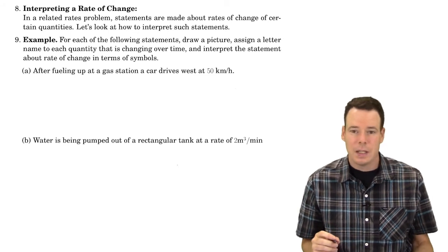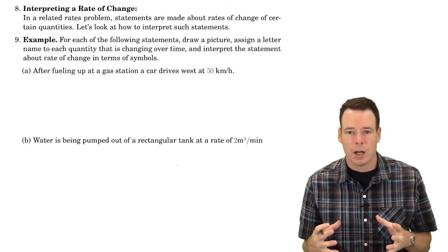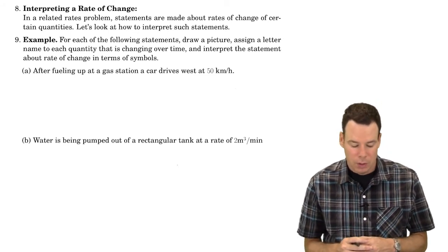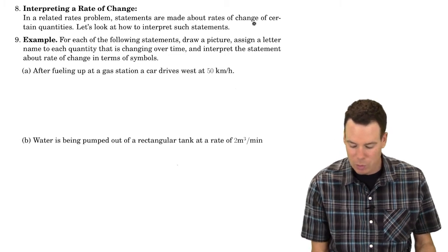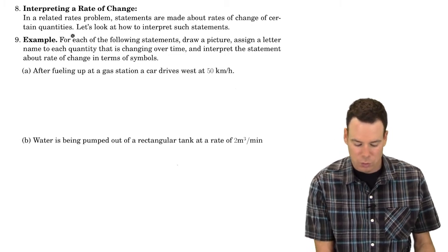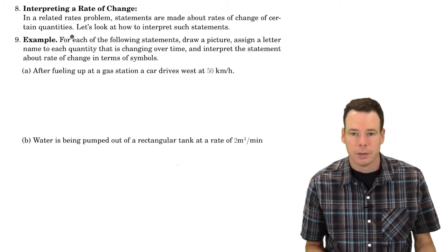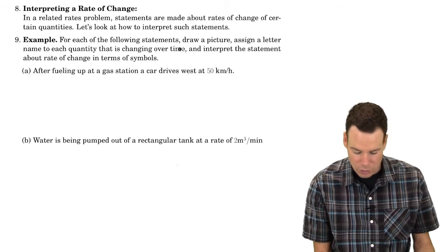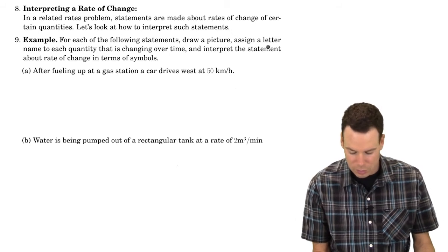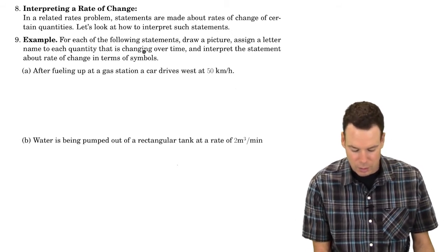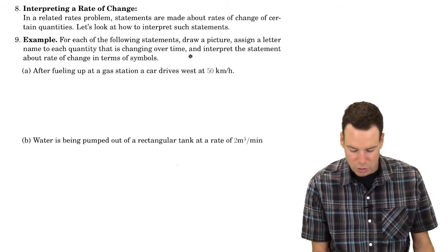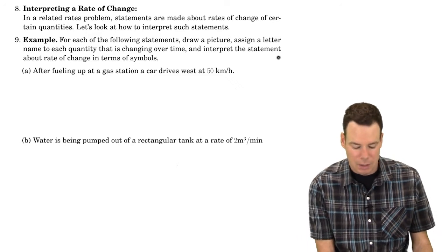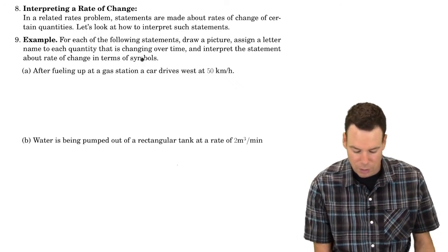Now we're going to look at interpreting a rate of change in a problem. In related rate problems, statements are made about rates of change of certain quantities. We'll look at how to interpret such statements. For each of the following, draw a picture, assign a letter to each quantity that is changing over time, and then interpret the statement about the rate of change in terms of symbols.